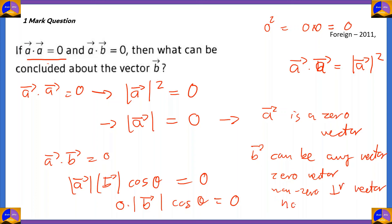Vector b could be any other non-zero vector as well. The vector b bar can have any value and it would be inconsequential to the result a bar · b bar = 0, because vector a is a zero vector. So b can be a zero vector, a non-zero vector, perpendicular, parallel, anti-parallel, or in any other inclination — it doesn't matter. The magnitude of vector a being 0 means b can have any value and these conditions will still remain true.